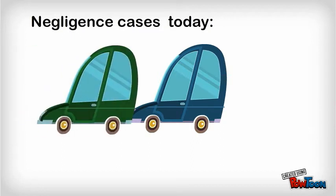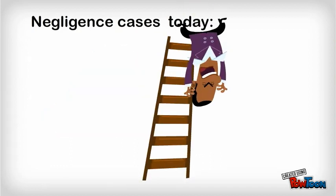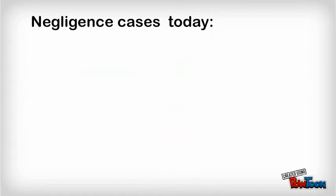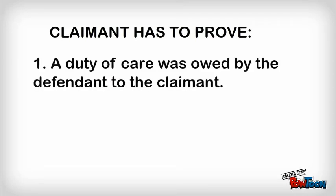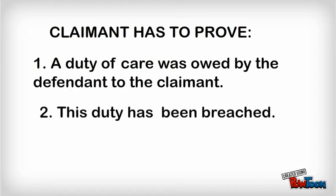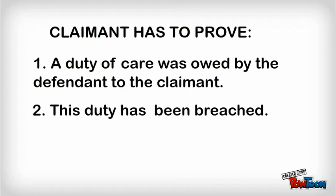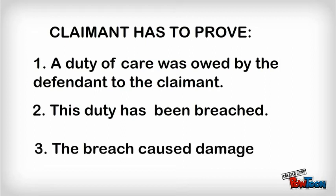Negligence claims may result, for example, from a road accident, from injuries at work, from careless medical treatment, or even from work badly done by an accountant or a lawyer. For a claimant to prove liability in negligence, they must prove three things: firstly, that a duty of care was owed by the defendant to the claimant; secondly, that this duty had in fact been breached — in other words, the defendant did something that was careless; and thirdly, that the breach caused damage. The loss suffered needs to have been caused by the defendant's carelessness, rather than some other cause.